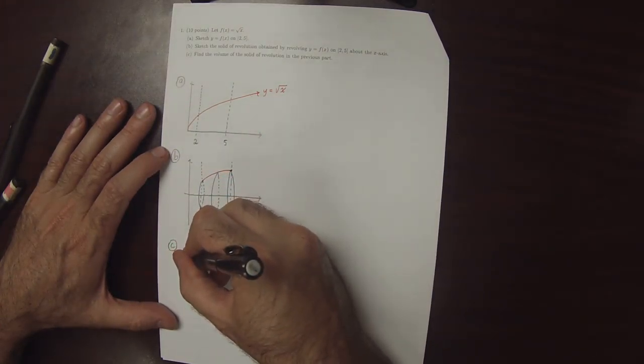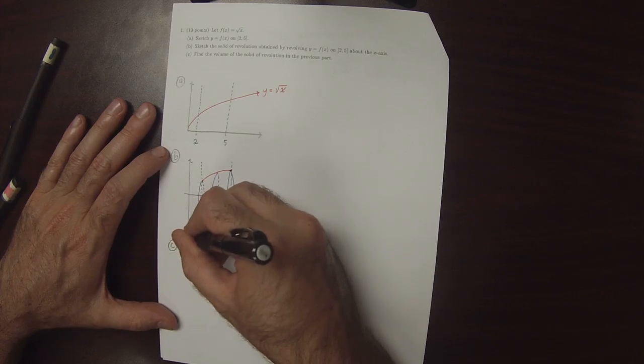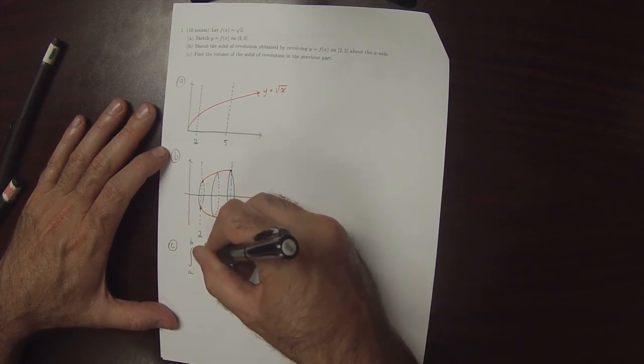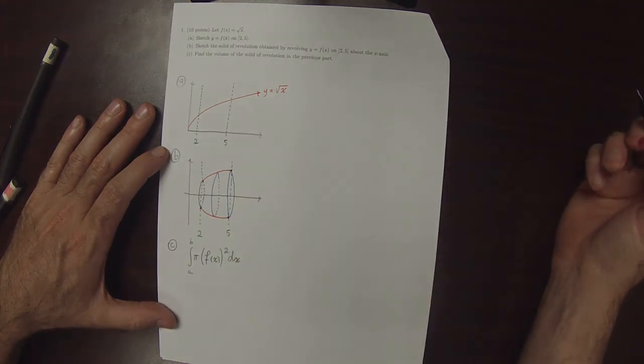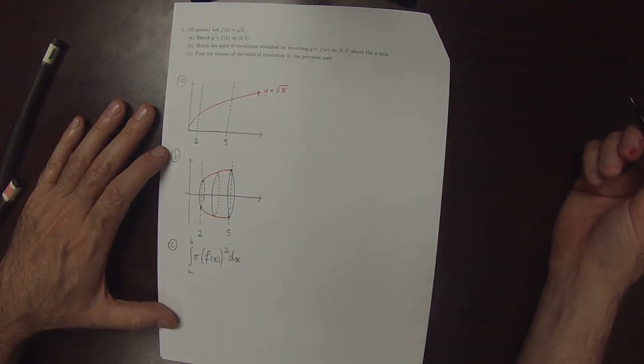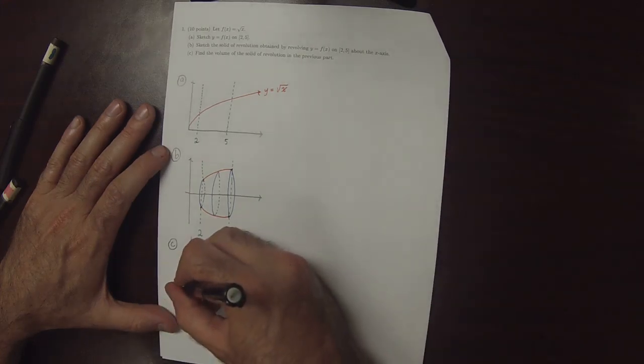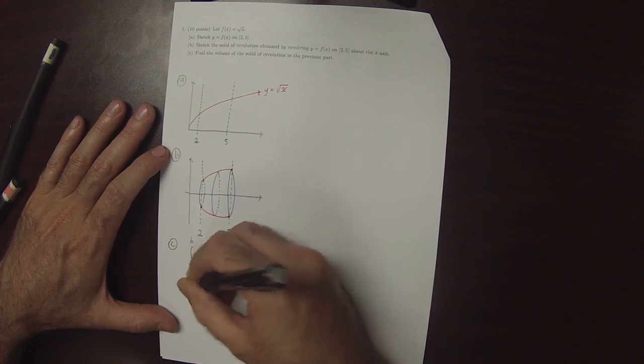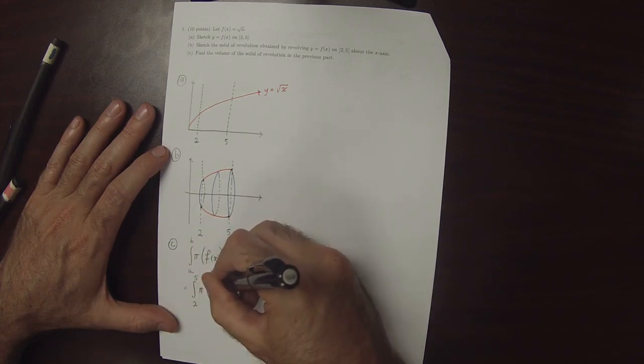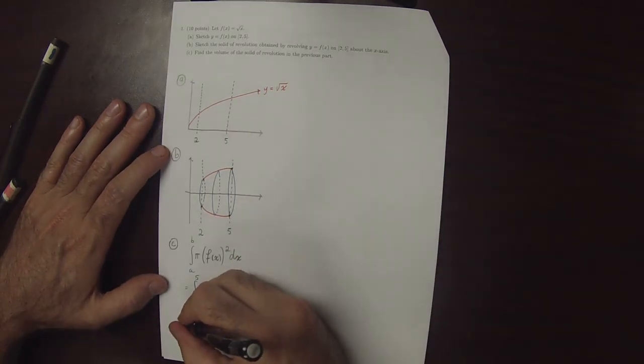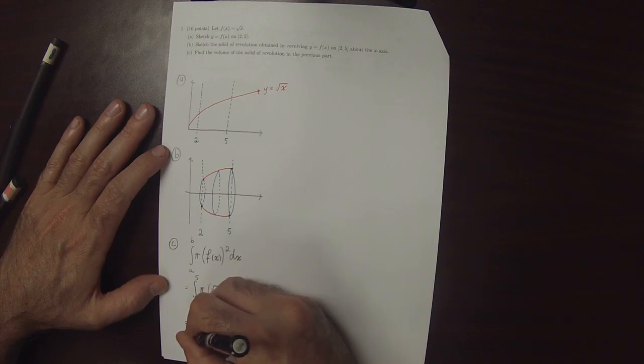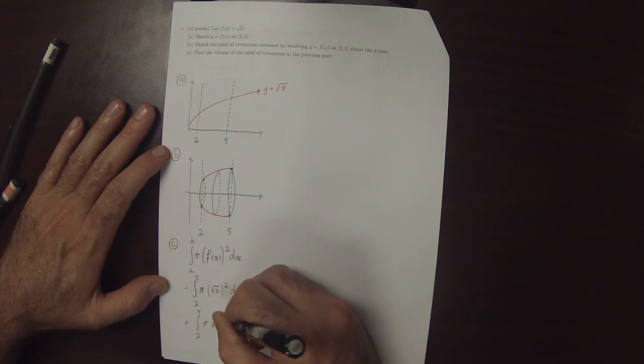So the formula is integral a to b pi f of x squared dx. So in this particular exercise, that's integral 2 to 5 pi square root of x squared dx. So that's integral 2 to 5 pi x dx.